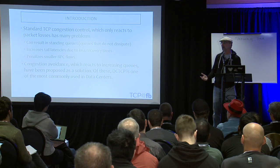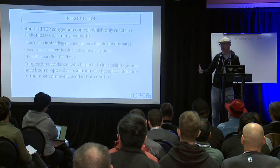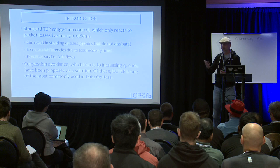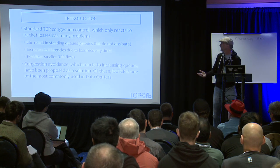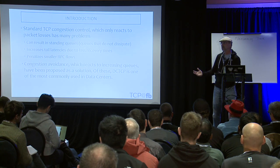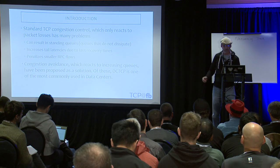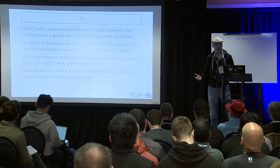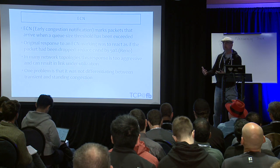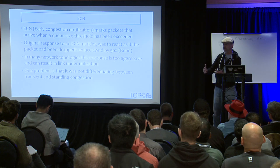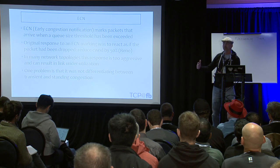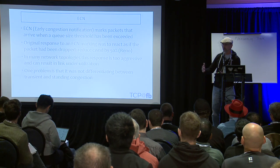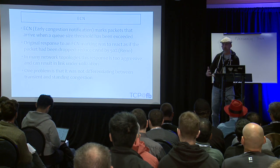Congestion avoidance, which reacts to increasing queues, has been proposed as a solution to these problems of loss-based congestion control. Of these, DCTCP is the most commonly used in data centers. DCTCP uses ECN — Early Congestion Notification — where switches mark packets when they arrive and the queue size is bigger than a given threshold. The idea is to mark packets when we're seeing the early stages of congestion: queue growth.